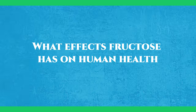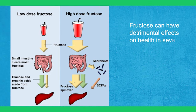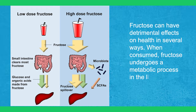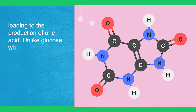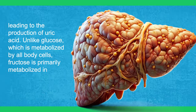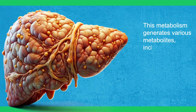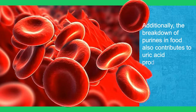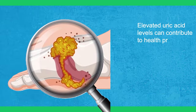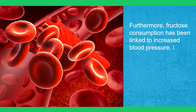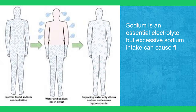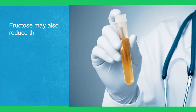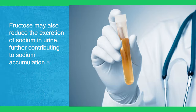What effects does fructose have on human health? Fructose can have detrimental effects on health in several ways. When consumed, fructose undergoes a metabolic process in the liver, leading to the production of uric acid. Unlike glucose, which is metabolized by all body cells, fructose is primarily metabolized in the liver. This metabolism generates various metabolites, including uric acid, which is released into the bloodstream. Additionally, the breakdown of purines in food also contributes to uric acid production. Elevated uric acid levels can contribute to health problems such as gout, kidney stones, and cardiovascular disease. Furthermore, fructose consumption has been linked to increased blood pressure. It is believed that fructose can lead to increased sodium absorption by the body. Sodium is an essential electrolyte, but excessive sodium intake can cause fluid retention and elevate blood pressure. Fructose may also reduce the excretion of sodium in urine, further contributing to sodium accumulation and high blood pressure.